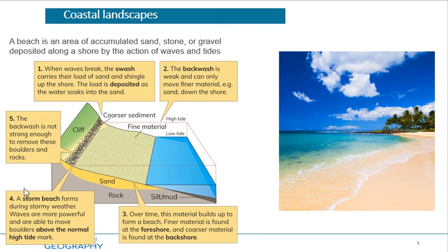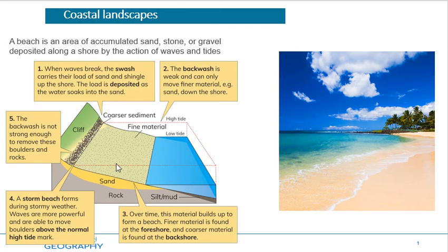A storm beach forms during stormy weather. A storm beach is basically a beach made entirely of pebbles — Bray in County Wicklow is a good example. During stormy weather, waves are more powerful and bigger rocks and boulders get brought up above the normal high-tide mark. These bigger rocks and boulders don't get carried back into the sea because the backwash of a constructive wave is weak and cannot carry the material back out, so it gets dropped at the backshore.